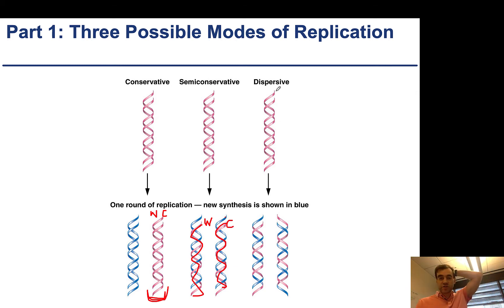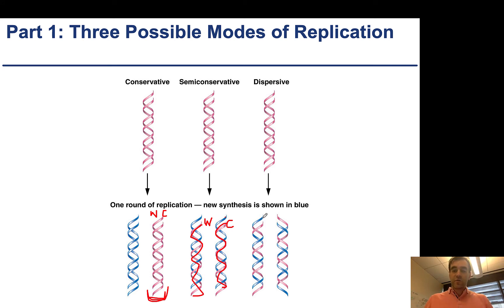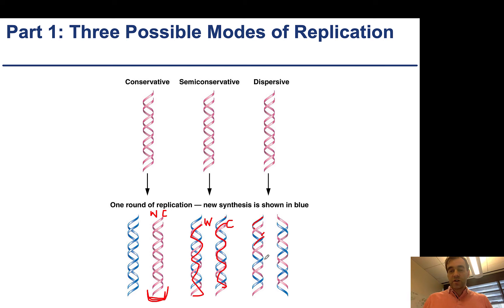The final model is dispersive. This just means that the strands are broken up, so you have different pieces together. Here you can see that initially this single strand starts as the new piece, but then it's covalently bound to part of the old piece before it goes back to the new piece, etc. This would be kind of a random process where it's all glued together. So these are the three models: conservative, semi-conservative, and dispersive.